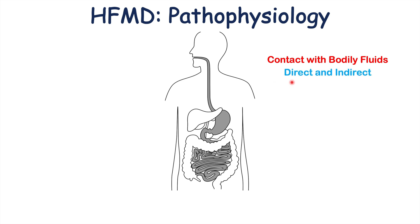All of this can occur via direct or indirect mechanisms. Direct meaning one infected child can directly transmit the virus to another child through respiratory droplets or oral secretions. Indirect meaning an infected child touches objects in the environment — furniture or toys — and another child who later touches those same objects becomes infected that way. So both direct and indirect transmission are possible.